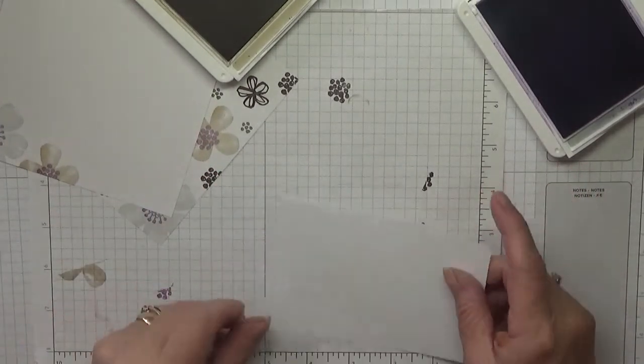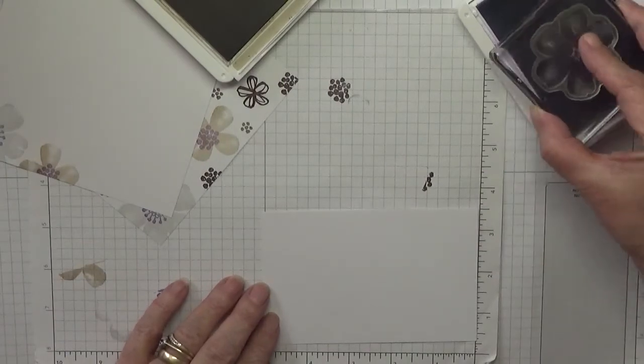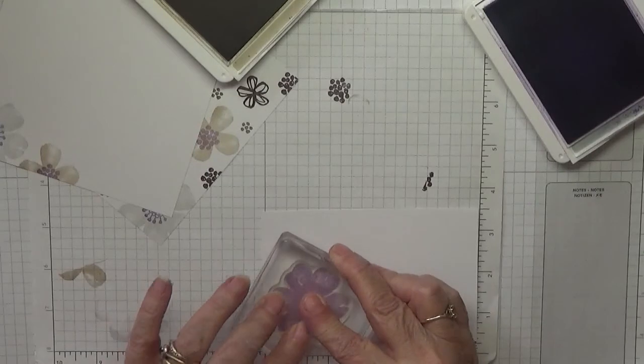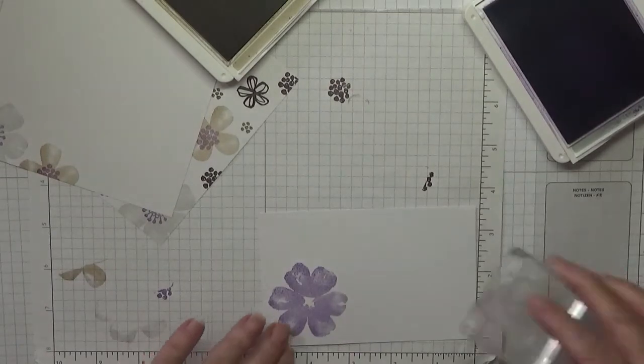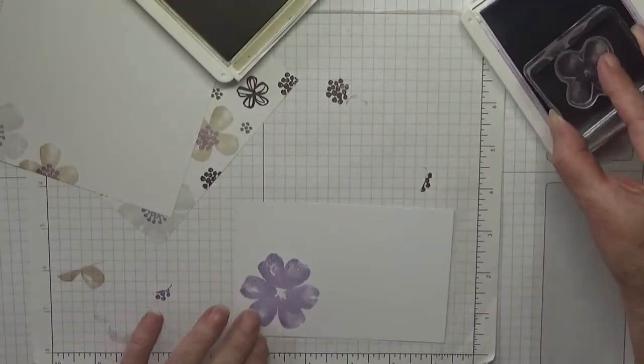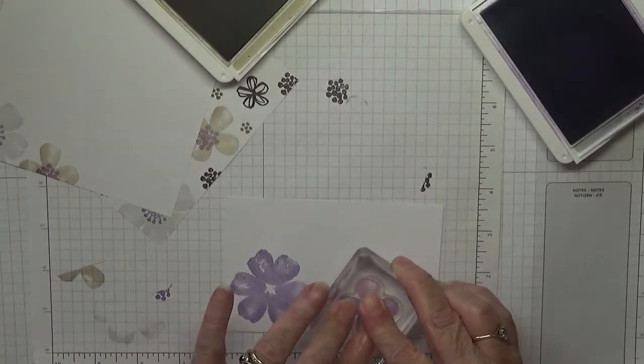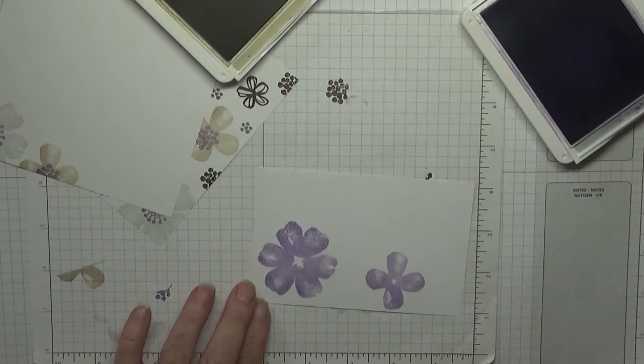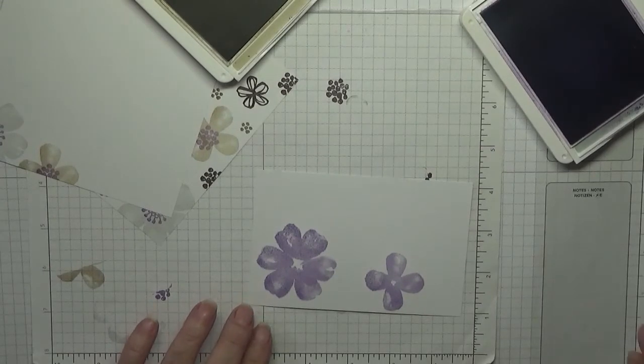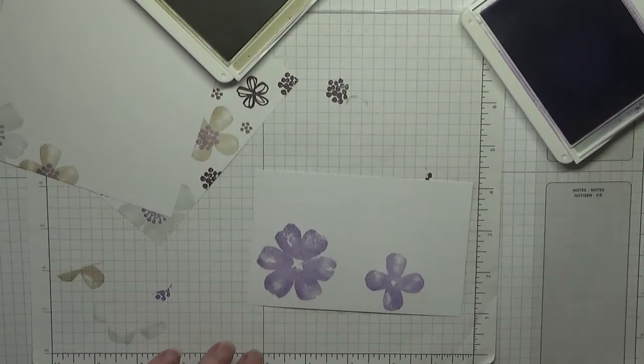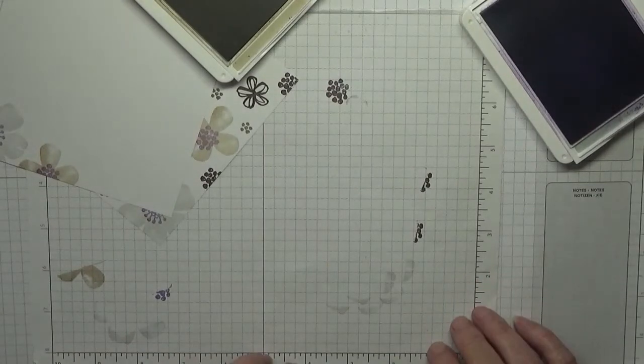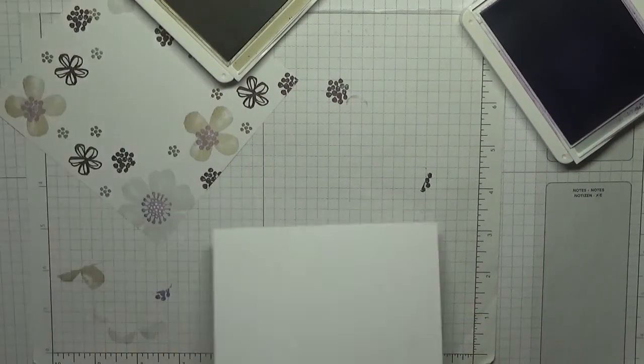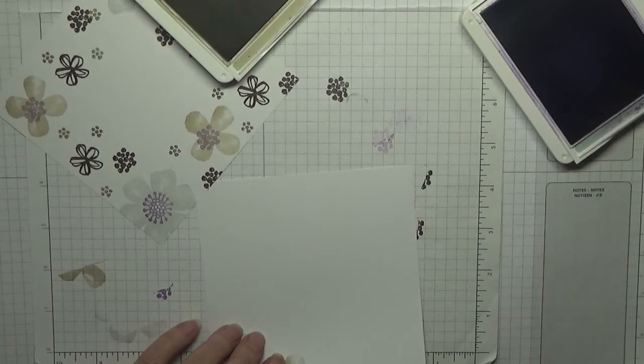Right while we've still got that out, with some scrap white I've got here we are going to stamp a Highland heather big flower and a Highland heather smaller flower like that. And that's it for that, they need cut now so we'll put them over there.